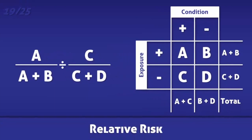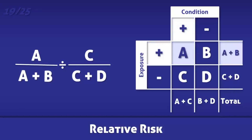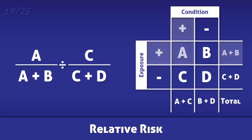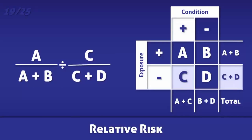Relative risk is the probability of a condition occurring in one group of people in comparison to another. To calculate the relative risk, divide the incidence of the condition in the group of people who are exposed to a risk factor by the incidence of the condition in the group of people who are not.